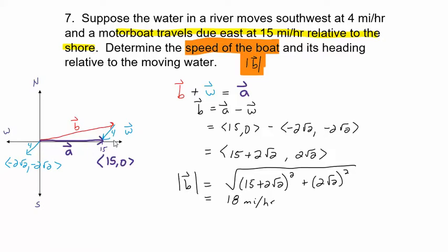If the current was headed directly opposite to the boat, you could just subtract: the boat would have to go 19 mph minus 4 to get 15. But because of the direction, it's not just a simple adding and subtracting situation.